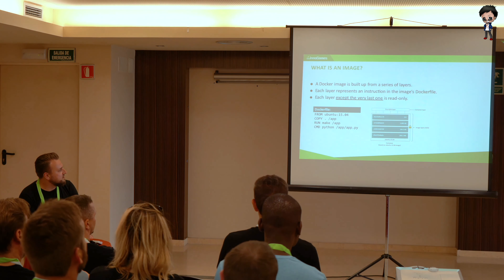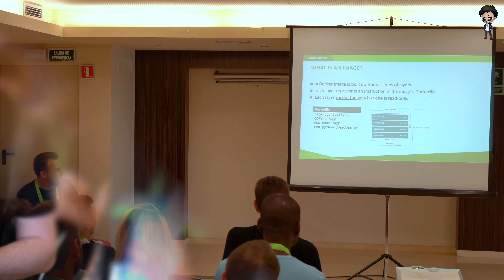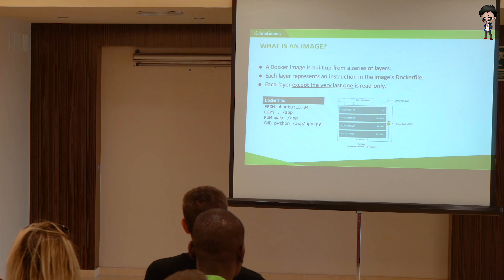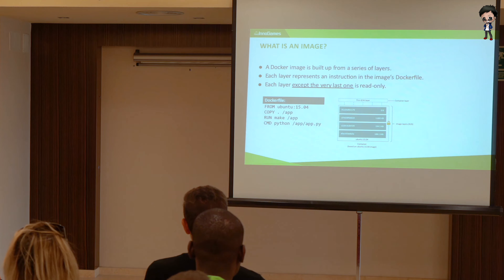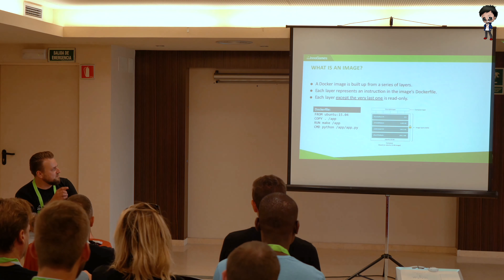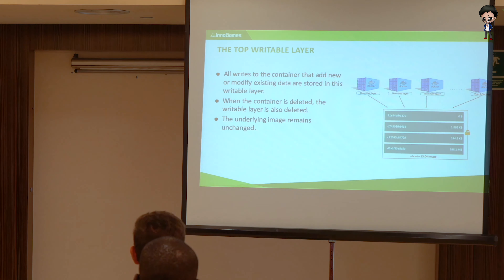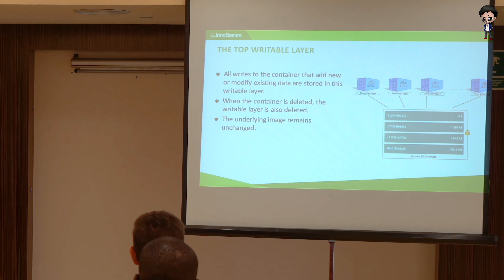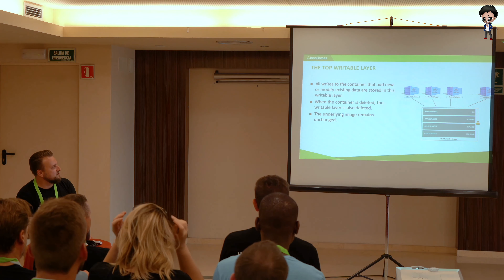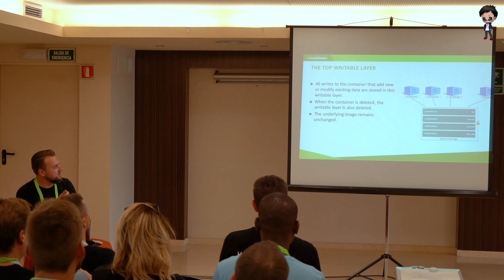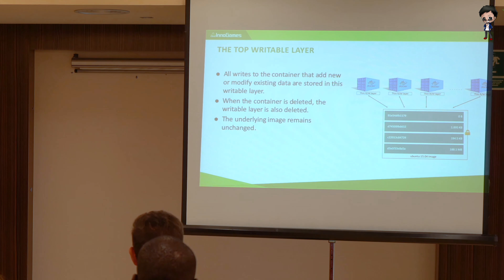The first layer is about 180-something megabytes because it's part of the operating system. Then we are copying the stuff in at almost 200 kilobytes, making the app takes about two megabytes, and running the command doesn't really use much space. On top of each image when you create a new container, Docker automatically creates a really thin read-write layer — that's basically your persistence layer when you start that container. But don't confuse that with volumes. You can have one Ubuntu image and four containers all using that image, each with just its thin read-write layer, which saves a lot of disk space. When the container is deleted, the read-write layer is deleted, but the underlying image remains unchanged so you can reuse it.